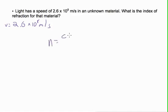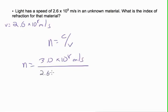We know that n equals c over v, so n is equal to 3.0 times 10 to the 8 meters per second divided by 2.6 times 10 to the 8 meters per second.